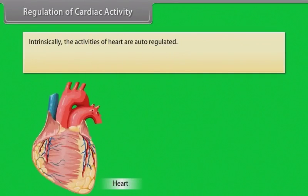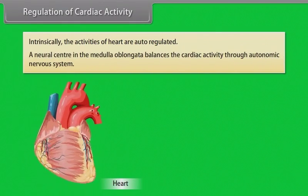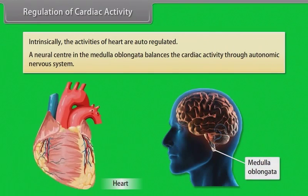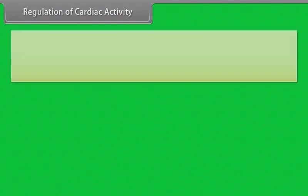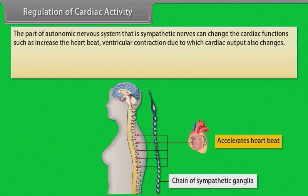Intrinsically, the activities of the heart are auto-regulated. A neural center in the medulla oblongata balances cardiac activity through the autonomic nervous system. The sympathetic nerves can change cardiac functions such as increasing heartbeat and ventricular contraction, thereby changing cardiac output.